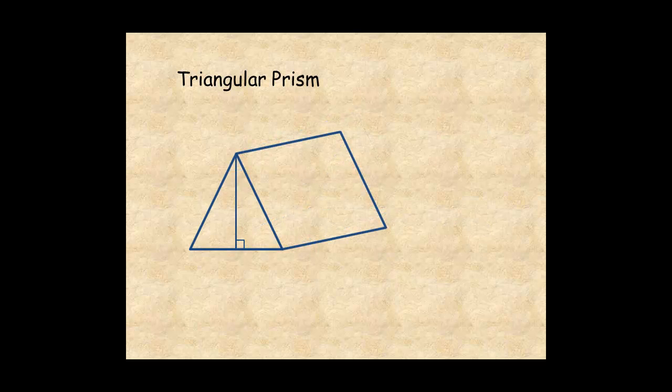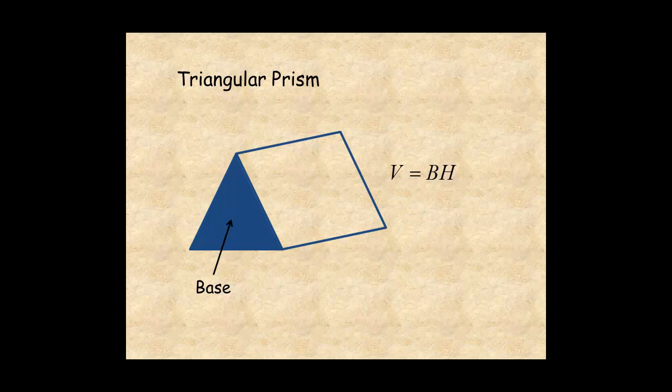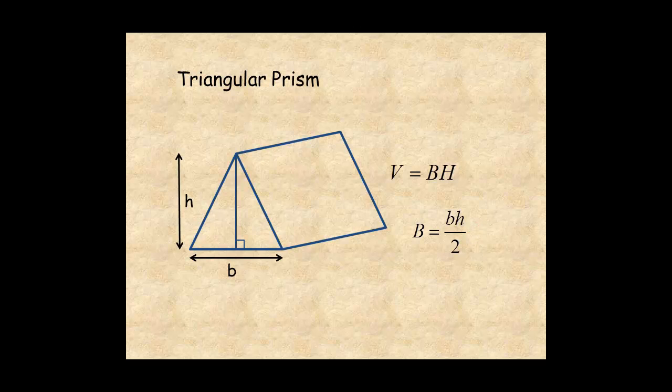The volume of a triangular prism is given by the formula B times H, where B is the area of the base triangle and H is the height of the prism. The area of the base triangle is the length of its base times the height divided by two.